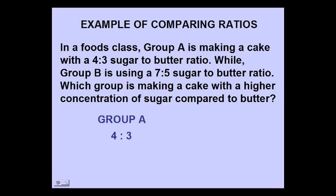Let's start with group A. We have a 4 to 3 ratio. Now we are going to make an equivalent ratio by changing that 3 to 15. So we are going to need to multiply both sides of the ratio by 5, making an equivalent ratio of 20 to 15.